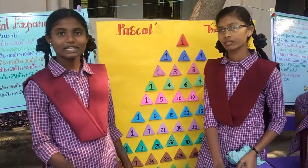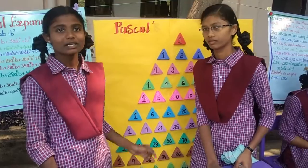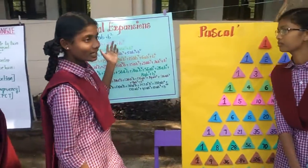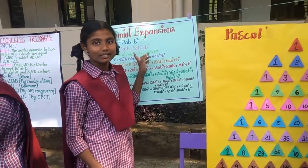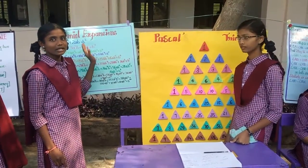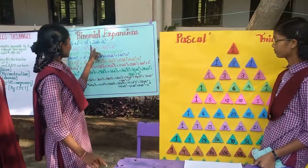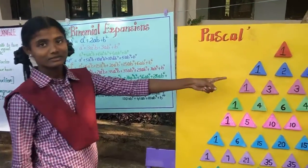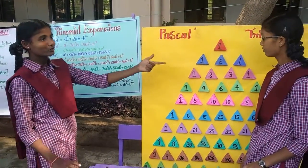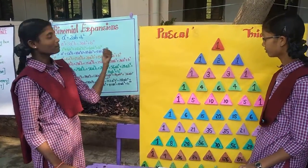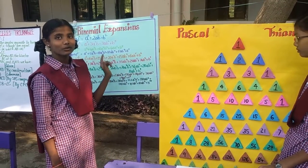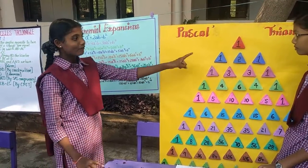So first of all we will take (A+B) squared. So A squared plus 2AB plus B squared. We will take the count of the coefficients of A squared, AB, and B squared. The coefficient of A squared is 1, the coefficient of AB is 2, and the coefficient of B squared is 1. So the (A+B) whole squared formula gives coefficients 1, 2, 1.